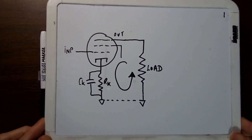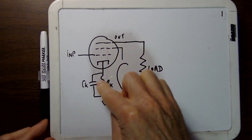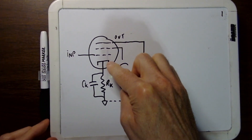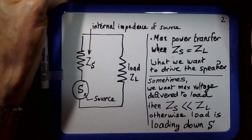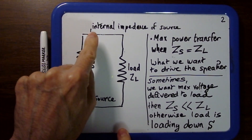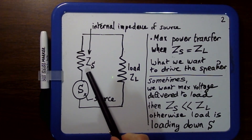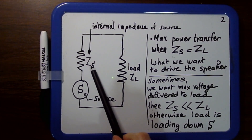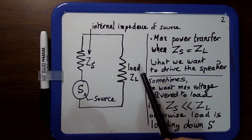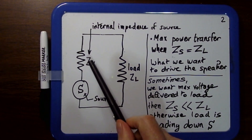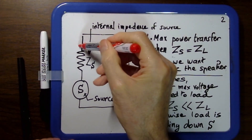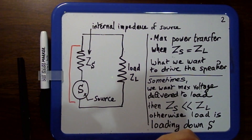Going back to the plate circuit with the load, it's basically a source and an internal impedance. On the left you have a source, an internal impedance of the source which I call Zs — S for source — and you have the load with an impedance of Zl. That would be the speaker, and this whole thing would be the tube — the 6V6.